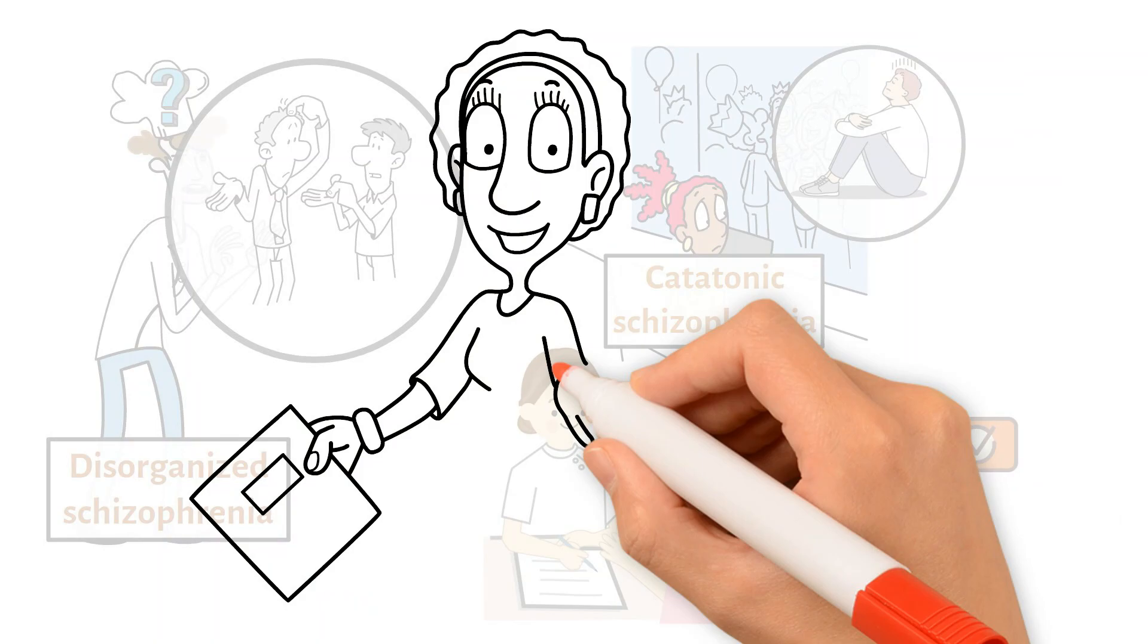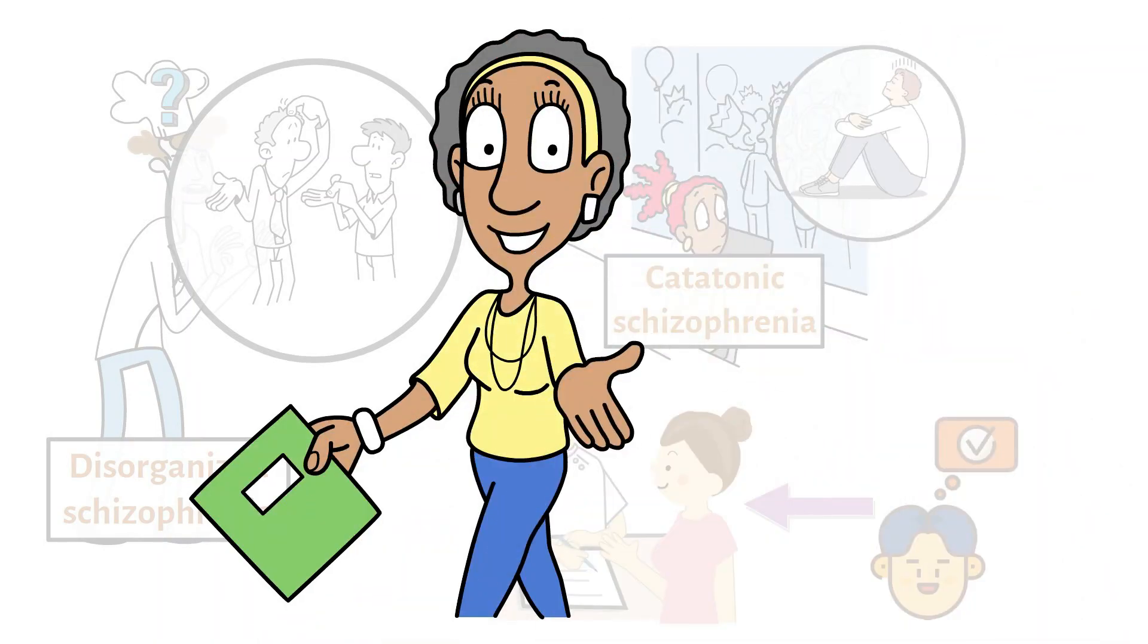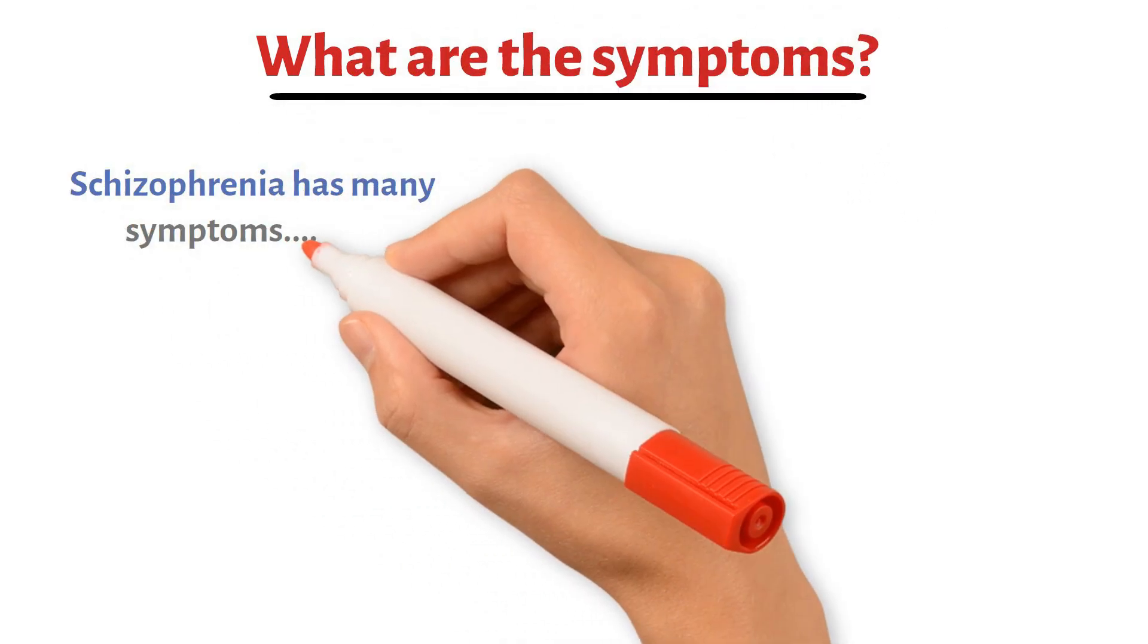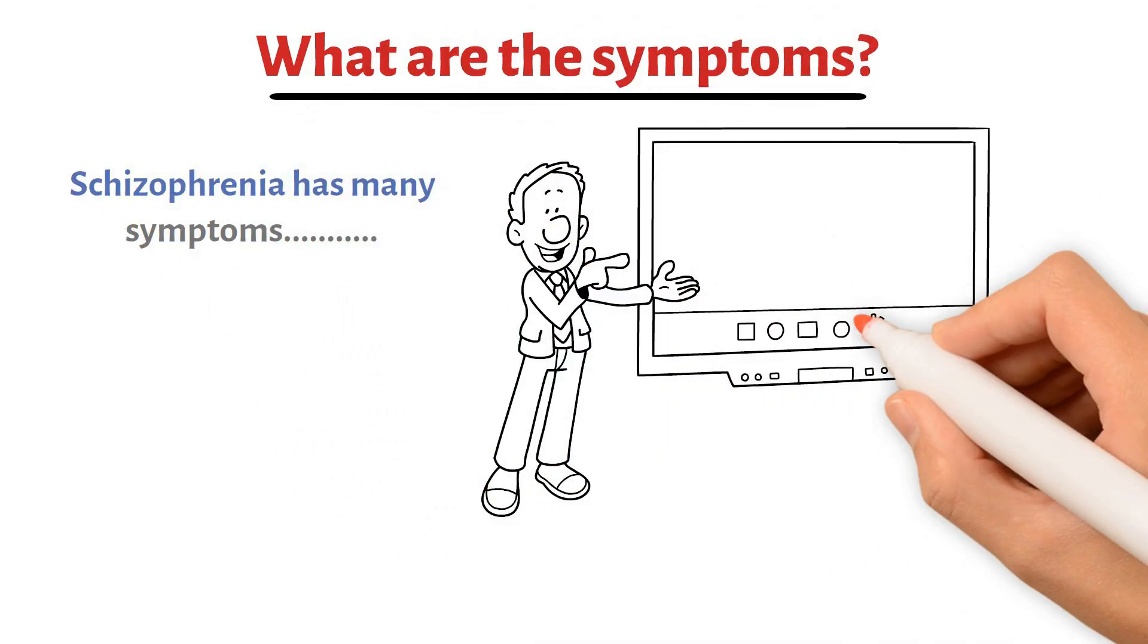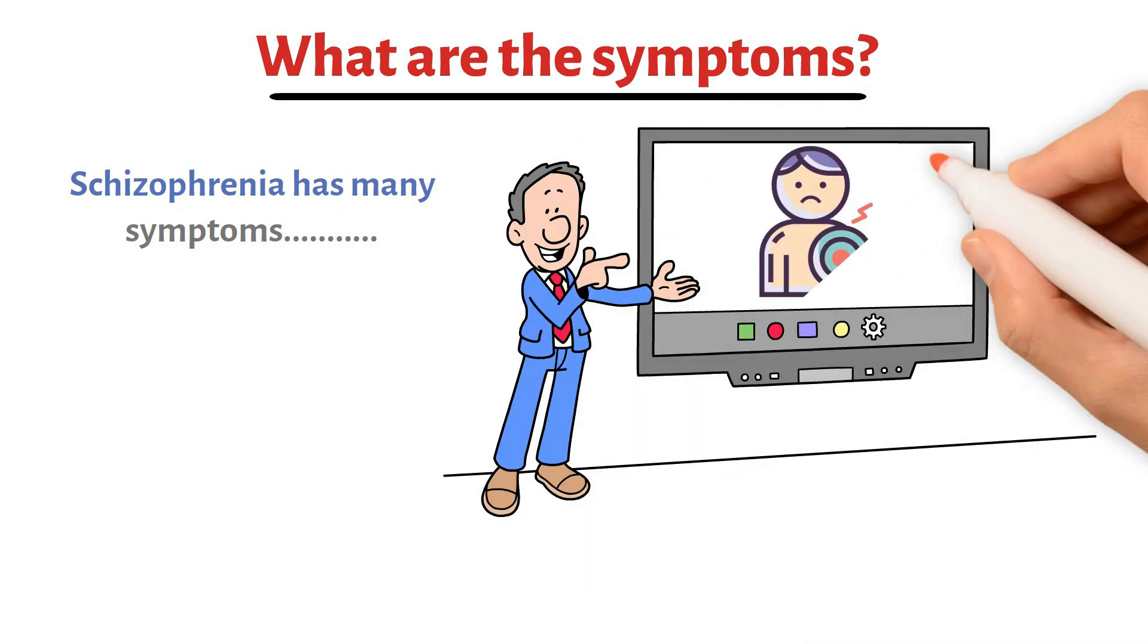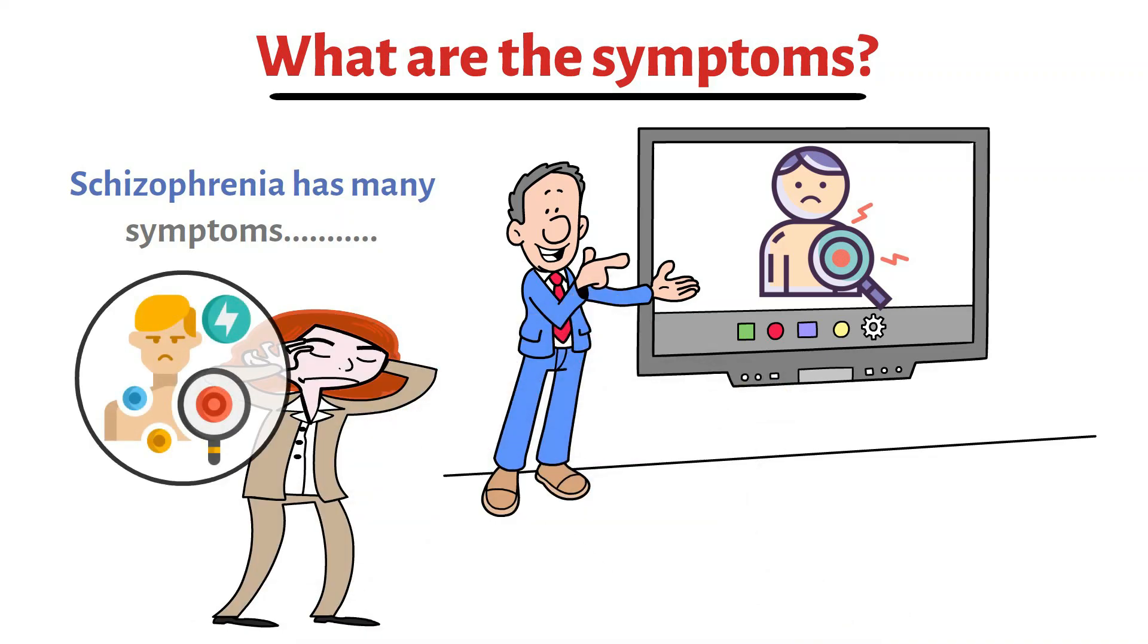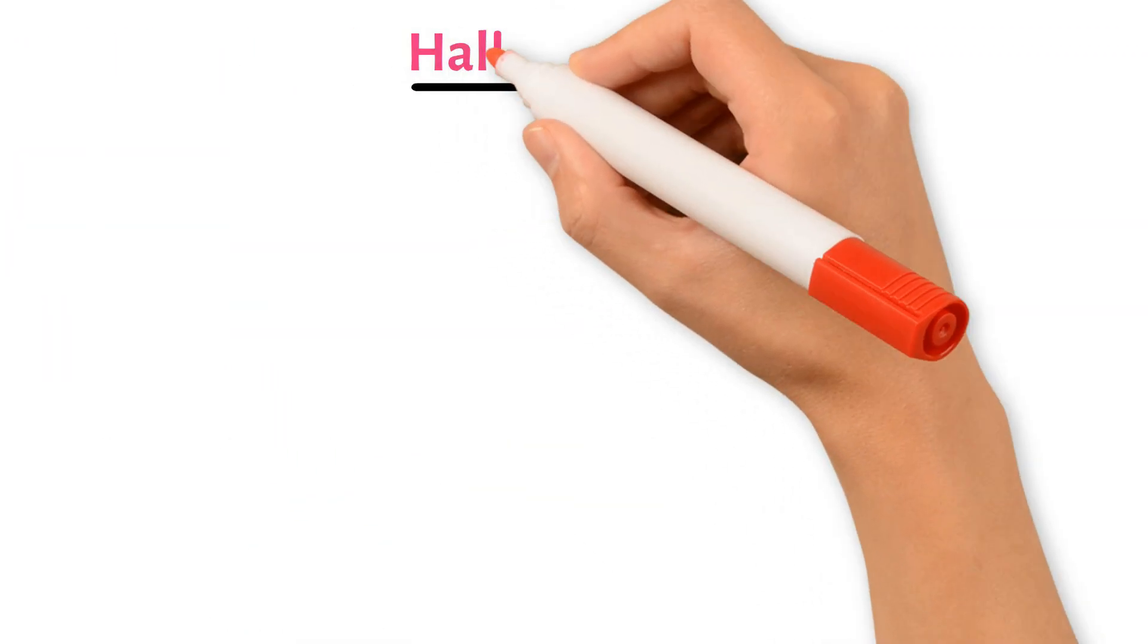These were some of the common types of schizophrenia. Now, let's move to the next point, where we will learn about its symptoms. Schizophrenia has many symptoms, but in this video, we have covered some common ones. People with schizophrenia might show symptoms just like hallucinations.